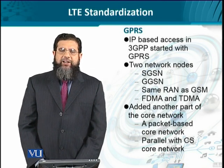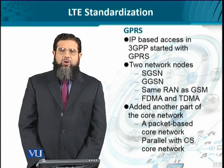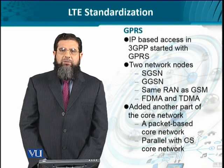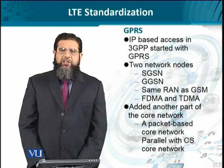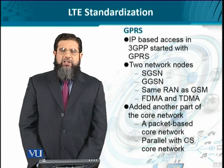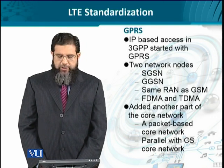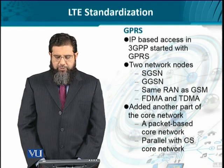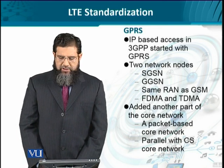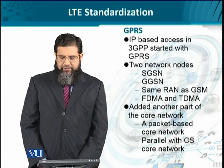Incorporating these entities into the network meant that a GSM network was now IP-enabled while still using the same radio access network technology. The multiplexing scheme was also not changed much — it was still based on Time Division Multiple Access over Frequency Division Multiple Access. This resulted in two core networks running in parallel: the first being a circuit-switched network, and the second a packet-switched network sitting alongside it.